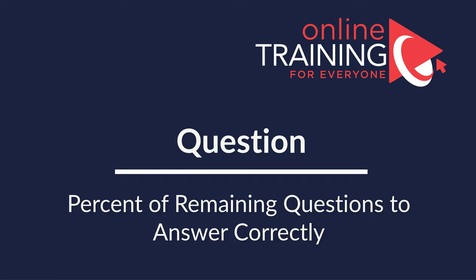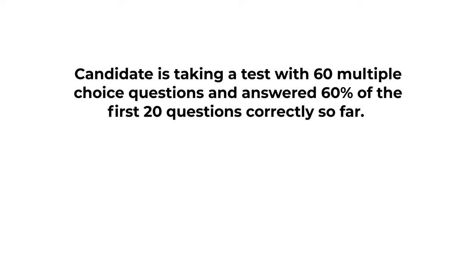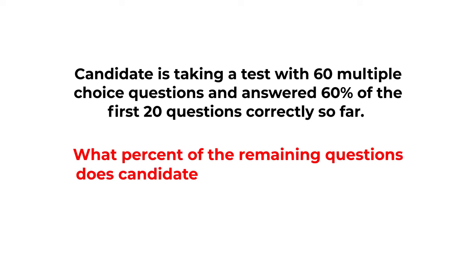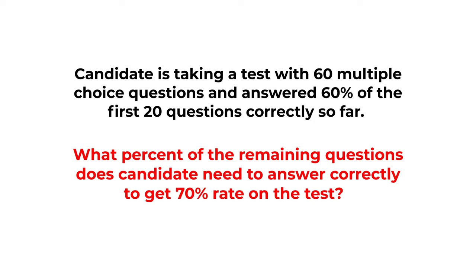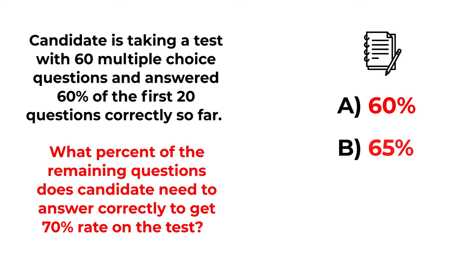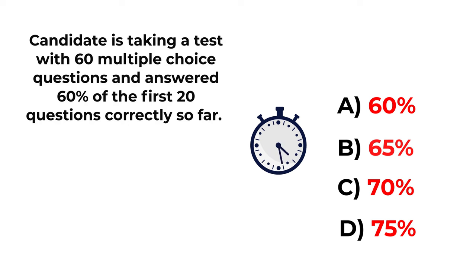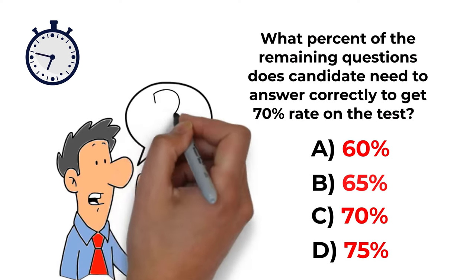Here is a frequently used question testing your understanding of percentages. A candidate has 60 multiple-choice questions and answered 60% of the first 20 correctly. What percent of the remaining questions must they answer correctly to achieve a 70% overall rate? Choices: A: 60%, B: 65%, C: 70%, D: 75%. This is a multi-step problem — give yourself 15 to 20 seconds.